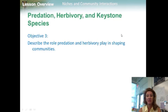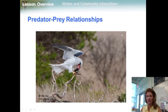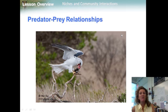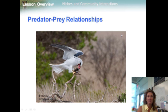Objective 3: describe the role predation and herbivory play in shaping communities. An interaction in which one animal — the predator — captures and feeds on another animal — the prey — is called predation. Predators can affect the size of prey populations in a community and determine the places that prey can live and feed. Birds of prey, for example, can play an important role in regulating the population sizes of mice, voles, and other small animals.